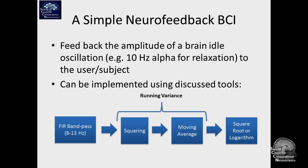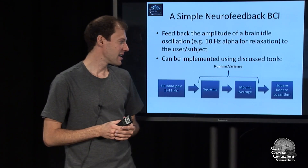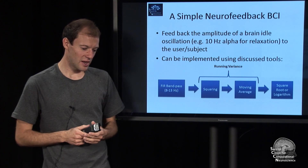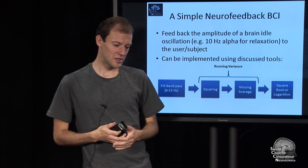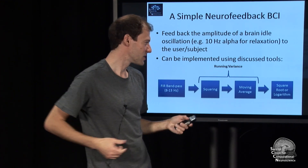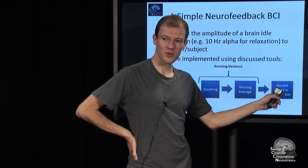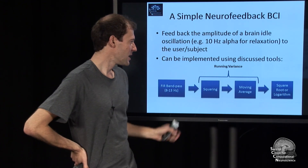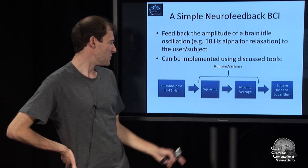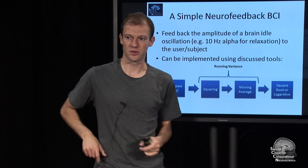Variance has the property that it's not really uniformly distributed — large values are emphasized because of the squaring. That's why at the end you probably want to take the square root again, or a logarithm. So there's a static filter, and also a spectral filter, and a temporal filter. That constitutes a neurofeedback solution.